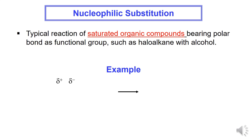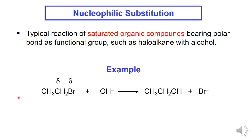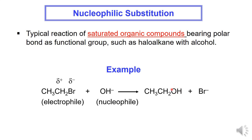C. Nucleophilic substitution is a typical reaction of saturated organic compounds bearing polar bonds as functional groups, such as haloalkanes. Example: CH3-CH2-Br is a haloalkane acting as an electrophilic site with a polar bond between carbon and Br. It is acted upon by the nucleophile hydroxide ion (OH⁻), and the product is formed where Br is replaced by the OH group.